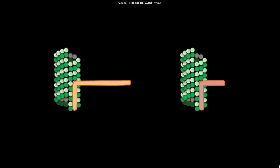Several different classes of proteins stabilize microtubules, and many of them show cell type specific expression. Among the best studied are the Tau family of proteins, which includes Tau, MAP2, and MAP4.